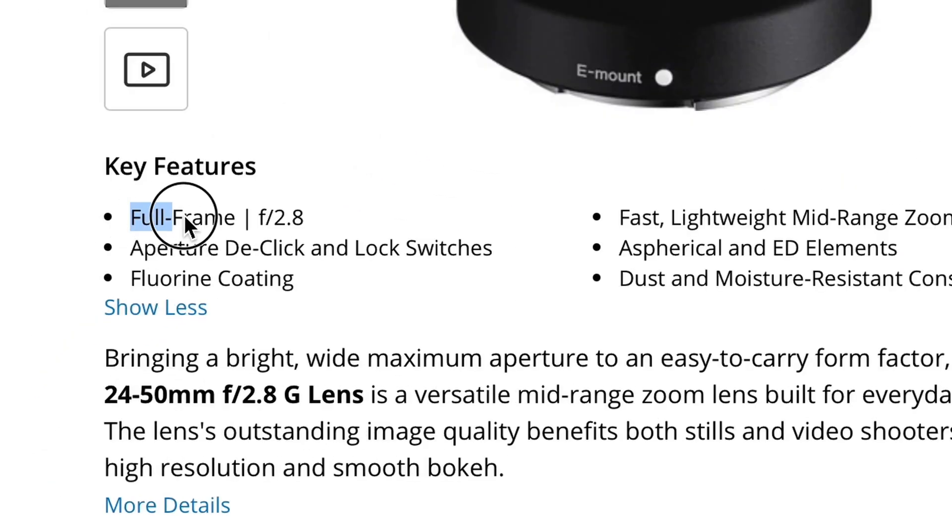One important thing to note if you have a full frame sensor: make sure your lens was designed for full frame. If you buy a lens designed for an APS-C sensor, it's going to have a vignette — you'll see black edges around the corners of your frame because that lens was designed for a smaller sensor.